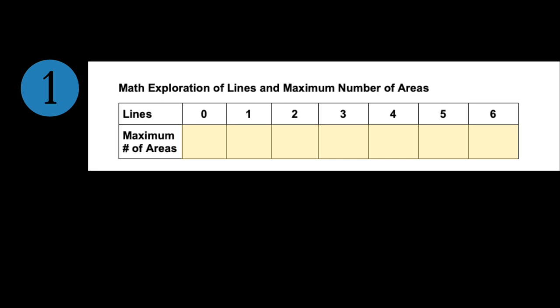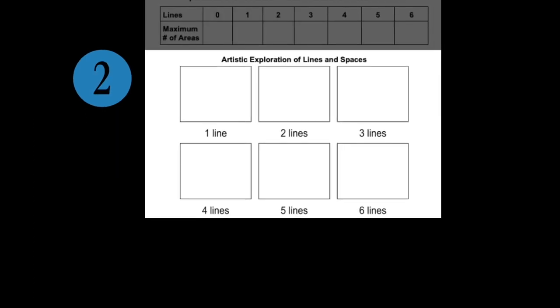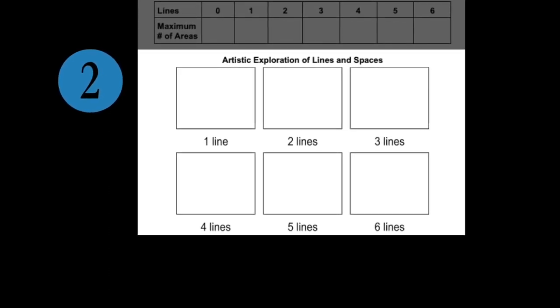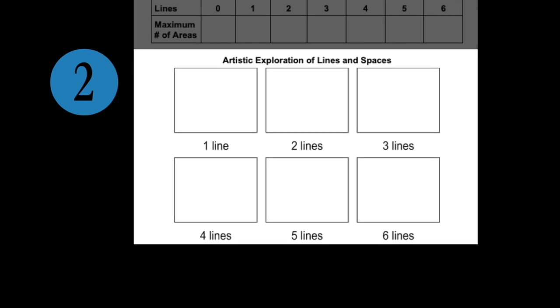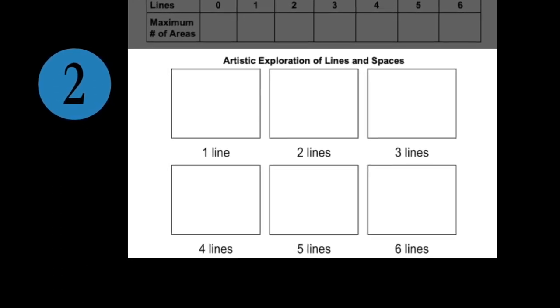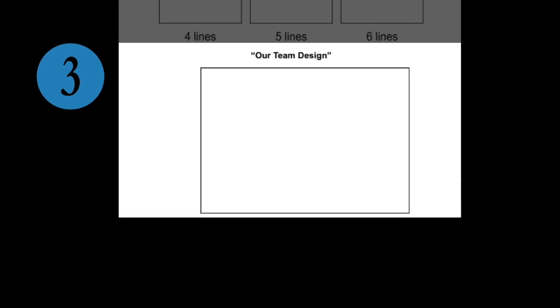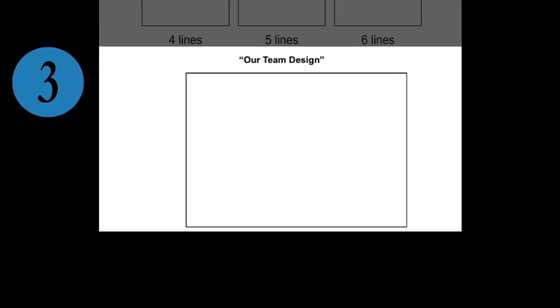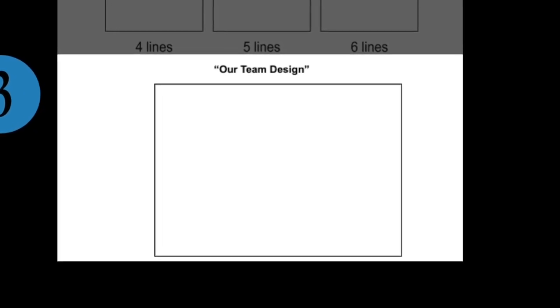Here's a quick review of the three challenges. First, your team will work together to complete this table of maximum areas created with zero to six lines. Second, you will work individually on creating artistic or interesting designs with different numbers of lines. You don't need to maximize areas here. And then third, you will compare the designs everyone in the team made and agree on one team design. Everyone on your team will draw the same design on their paper to show they all agree.